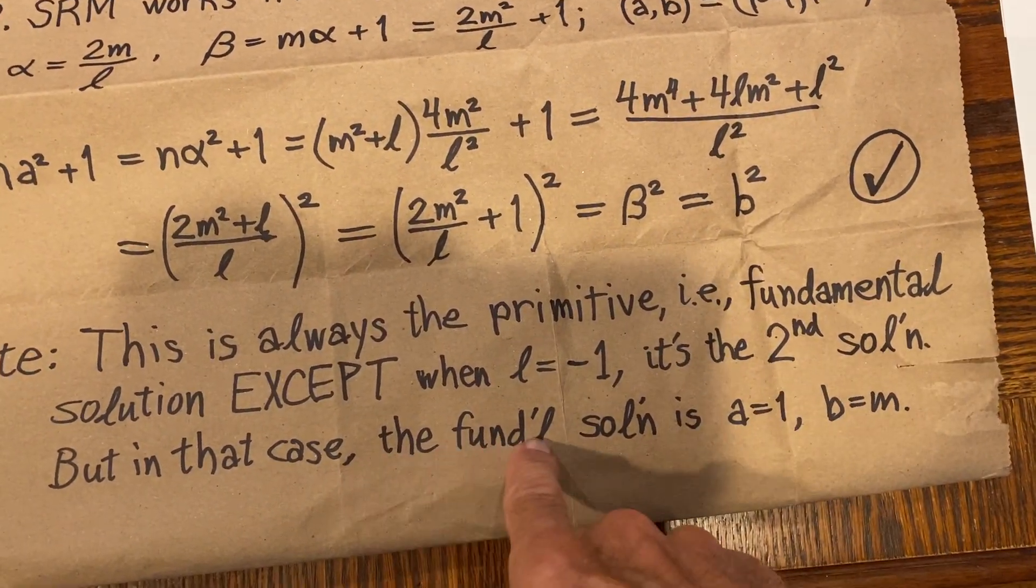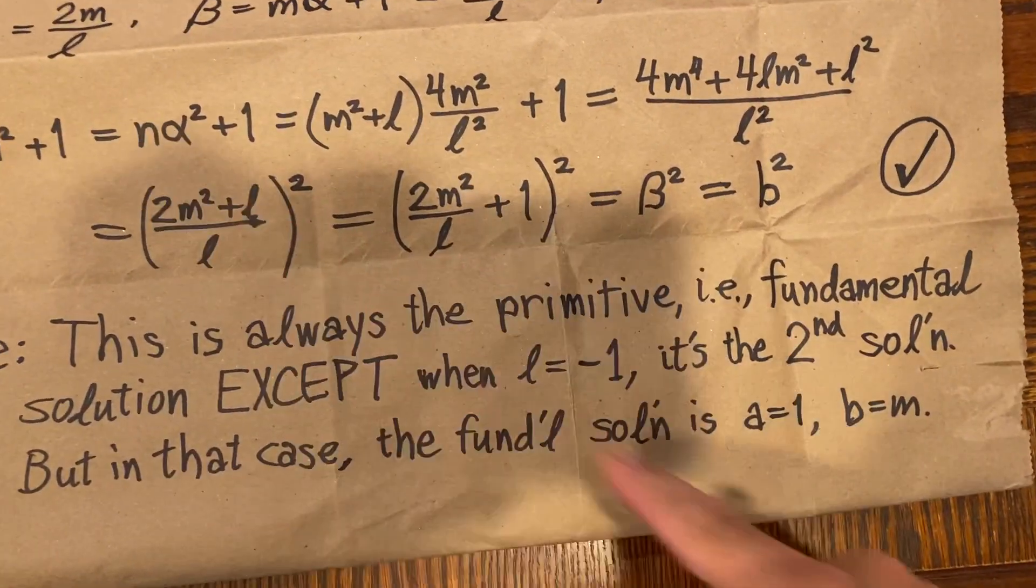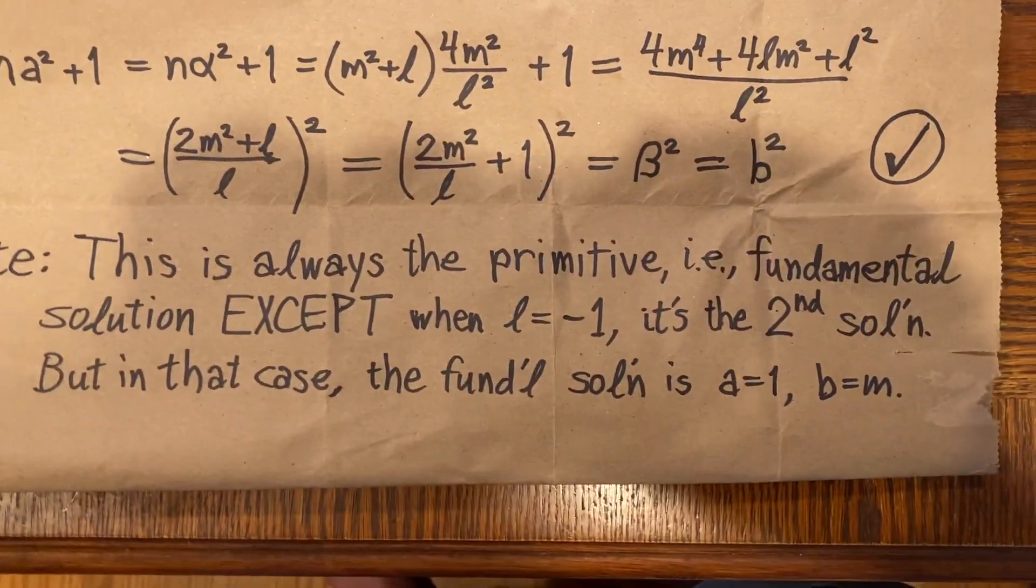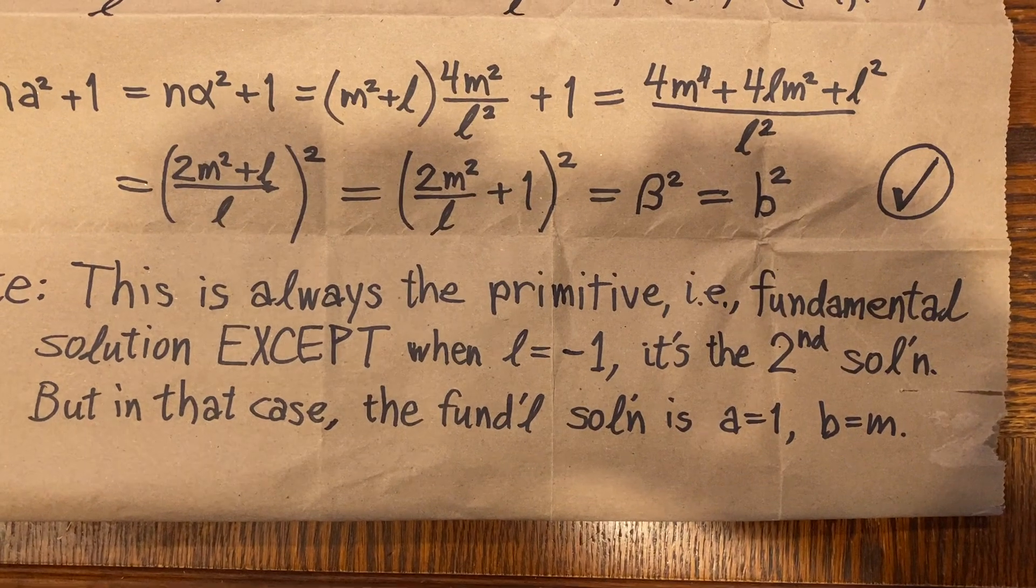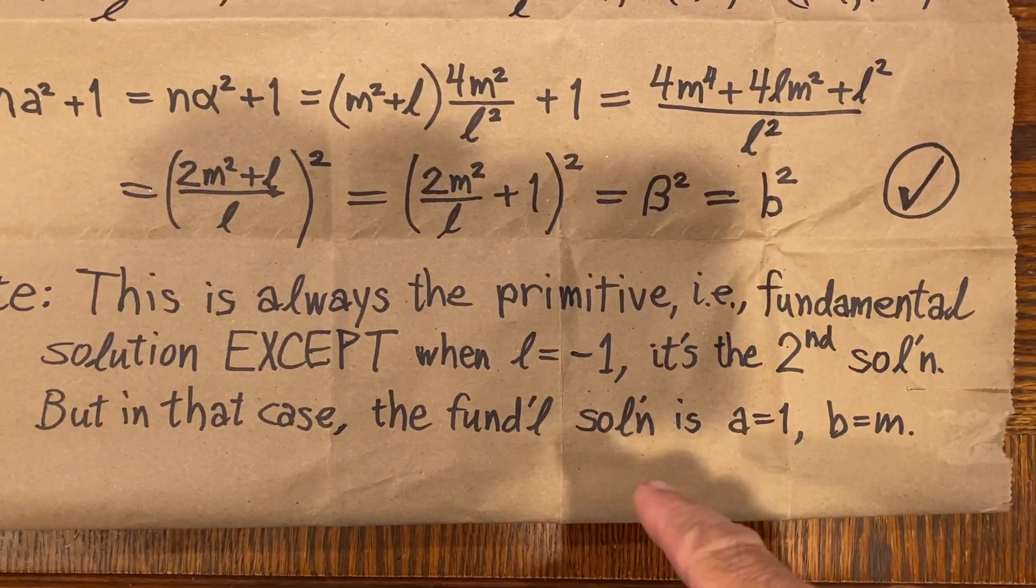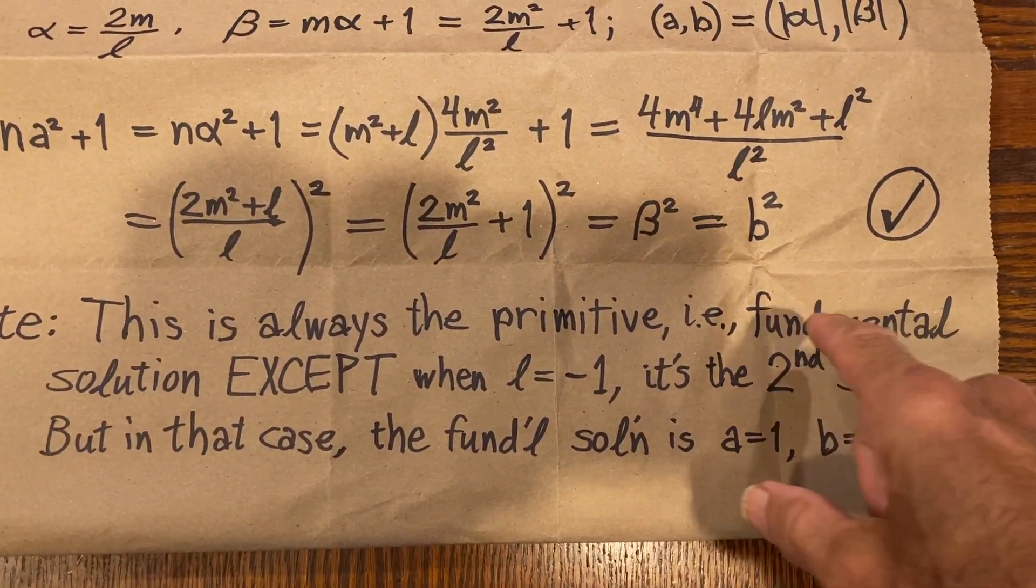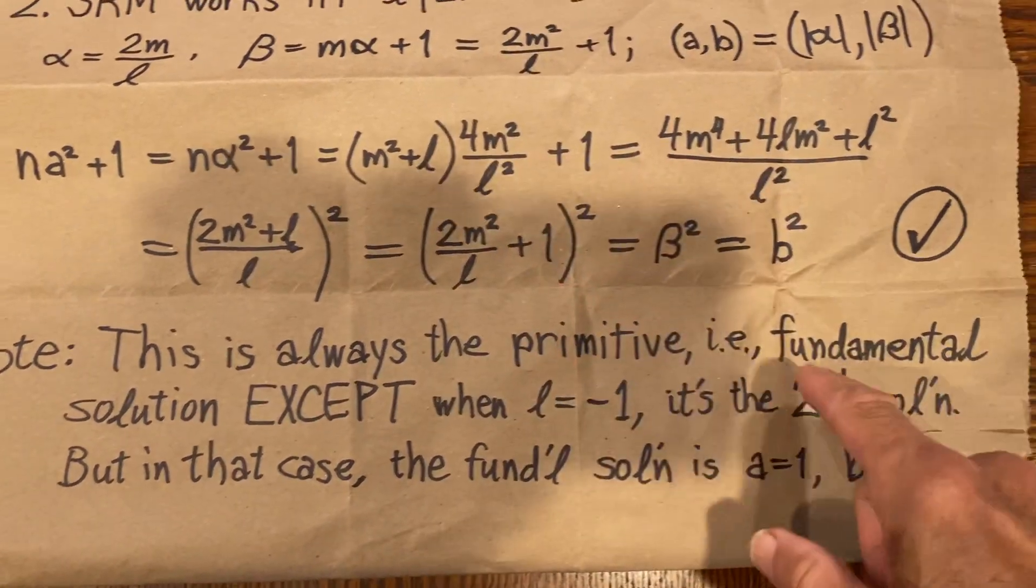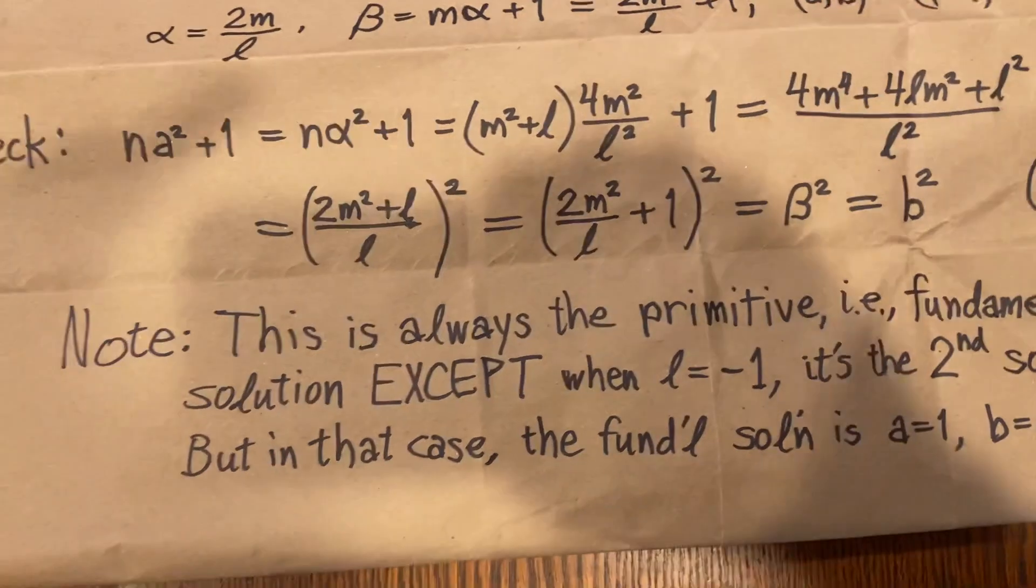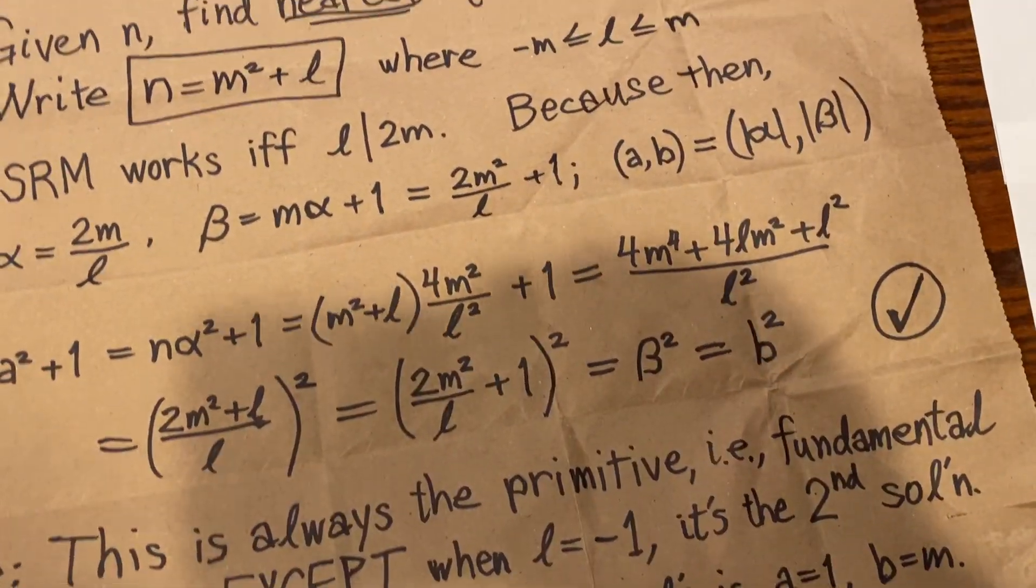But then the fundamental solution is just very simple. It's a equal 1, b equal m, which you can check out for yourself. And I think you'll find right away that that works when n is m squared minus 1. Now, the fundamental solution is the smallest one for n. And it turns out that the solution we got from this one can be generated from that in one iteration to give the second solution as the one that the square remainder method will give.